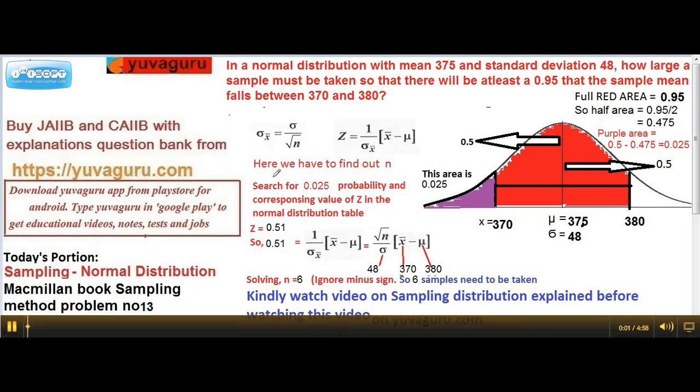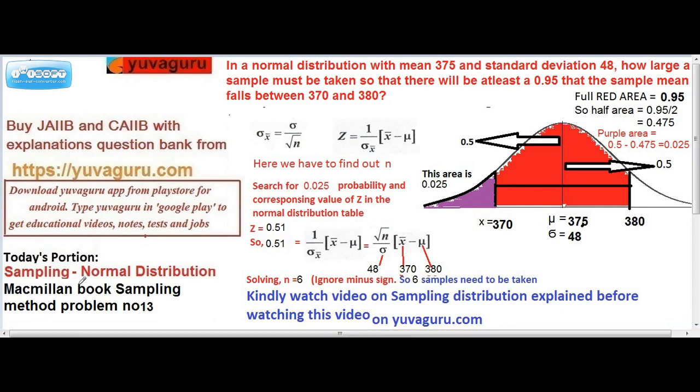Hi friends, let's solve today the unsolved problem of Macmillan's book on CAIIB for sampling distribution, which is normal distribution. This is problem number 13.